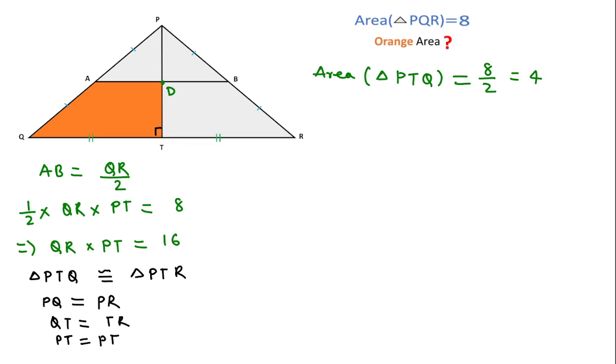And length of AD will be equal to half of QT by midpoint theorem, we can write QT over 2. And in place of QT we can also write QR over 2, this means QR over 4 we can write in place of AD.